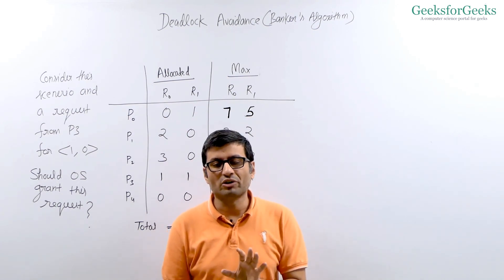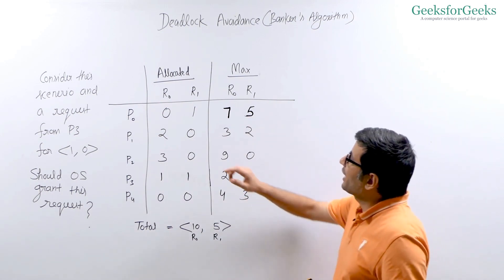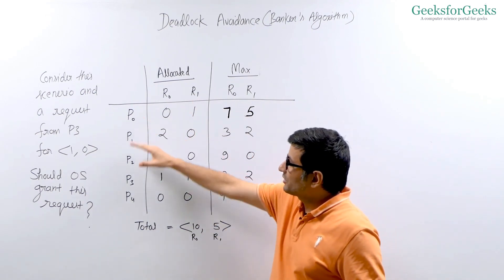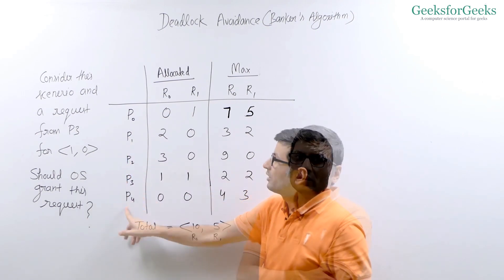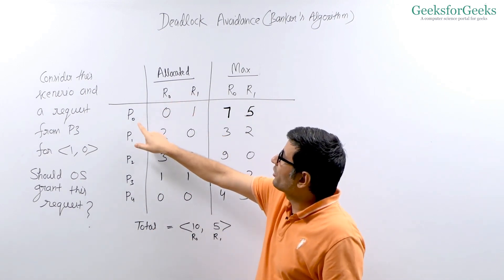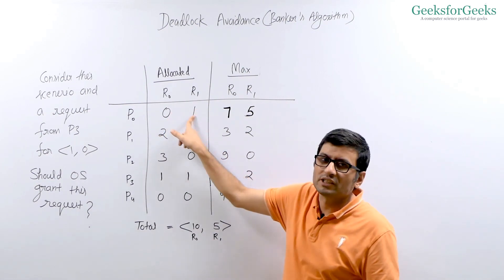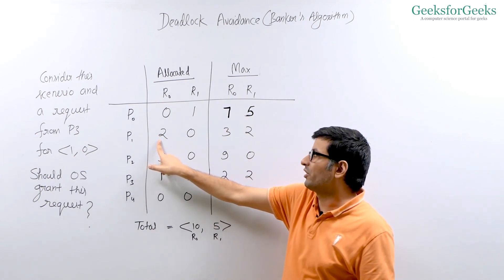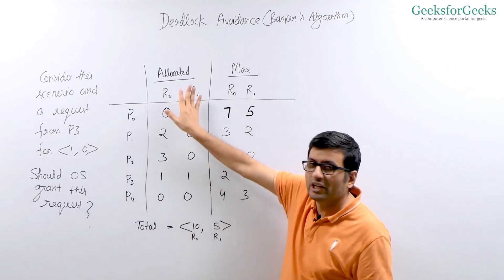Here I have drawn a scenario where we have two resources R0 and R1, and there are processes currently in the system: P0, P1, P2, P3, P4. These processes are currently holding these many instances of the resources. P0 is holding zero instances of R0 and one instance of R1. P1 is holding two instances of R0 and zero instances of R1. That's the allocation part — currently allocated resources.